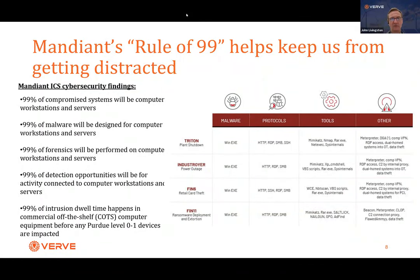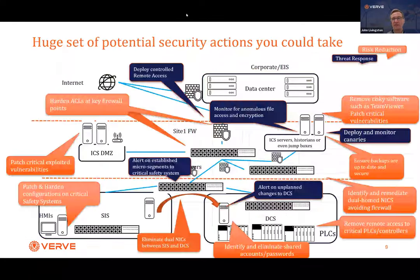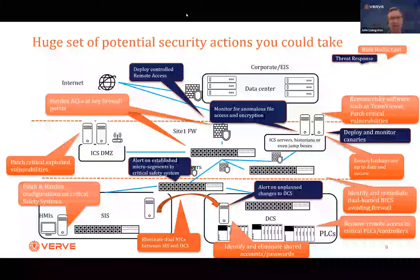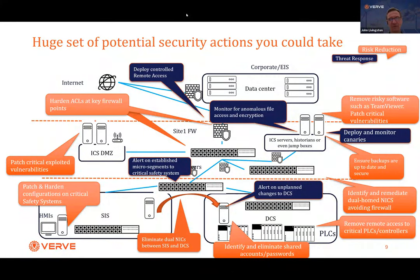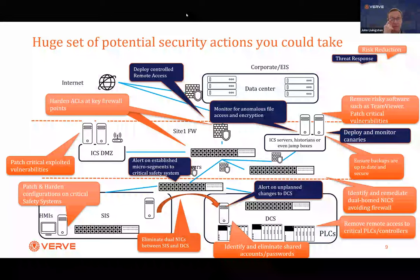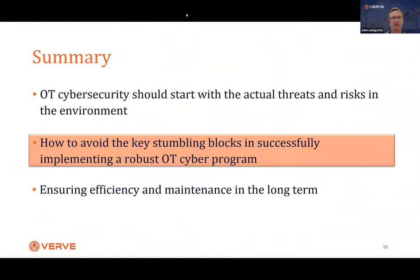We need to keep our eye on where the largest threats happen — not to say we only want to focus on workstations and servers, but we need to keep that in mind when building a program. There are literally thousands of things you could do to improve OT security: removing unauthorized software like TeamViewer or Angry IP Scanner, ensuring backups are up to date, eliminating dual-homed connections routing around firewalls, managing remote access directly into control systems. The challenge is knowing where to begin.